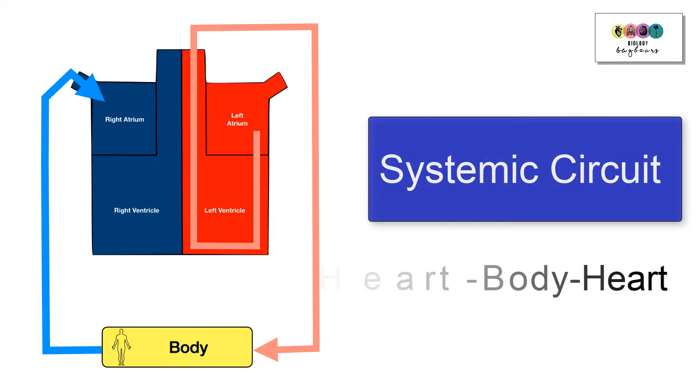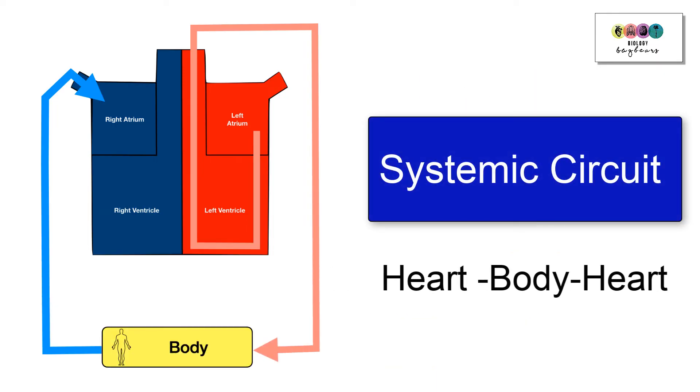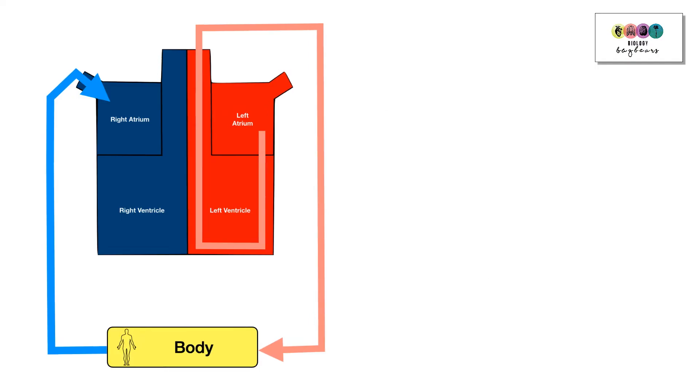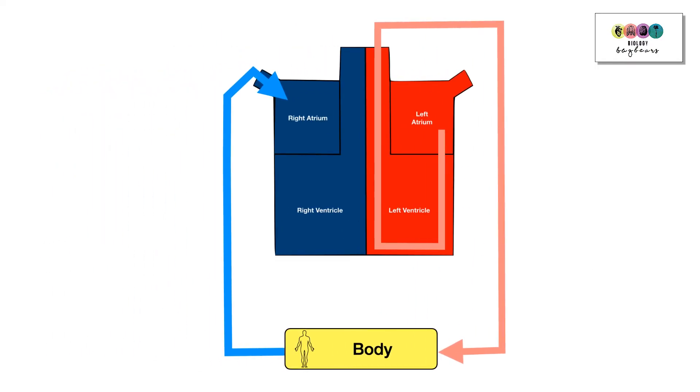The systemic circuit is all about pumping blood from the heart all over the body and back to the heart again. So the systemic circuit begins at the left ventricle where blood is pumped out of the left ventricle and leaves the heart in the aorta, carried away in that large artery.